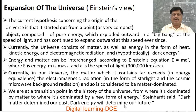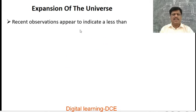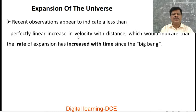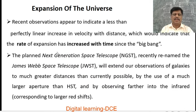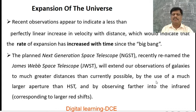Dark energy will determine our future. Recent observations appear to indicate a less than perfectly linear increase in velocity with distance, which would indicate that the rate of expansion has increased with time since the Big Bang. The Next Generation Space Telescope (NGST), recently renamed as the James Webb Space Telescope (JWST), will extend our observations of galaxies to much greater distances by using a much larger aperture than the Hubble Space Telescope and by observing farther into the infrared, corresponding to larger redshift.